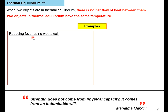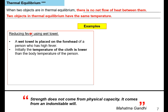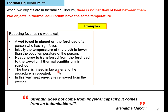Here are examples of thermal equilibrium in use. First, reducing fever using a wet towel: a wet towel is placed on the forehead of a person who has high fever. The person has a higher temperature; the wet towel has a cooler temperature. Initially, the temperature of the cloth is lower than the body temperature. Heat energy is transferred from the forehead to the towel until thermal equilibrium is reached. The towel is then rinsed in tap water and the procedure is repeated, so that heat energy is removed from the person.